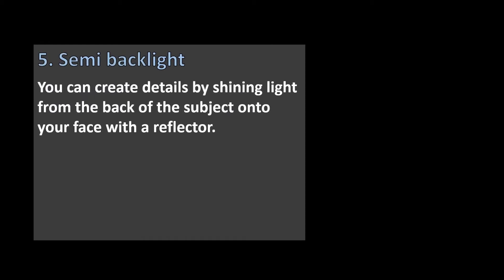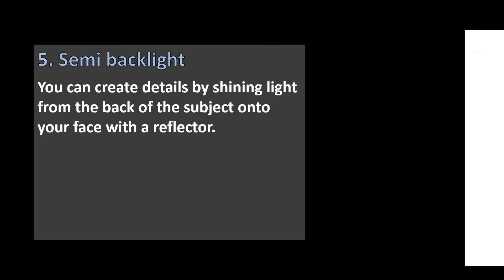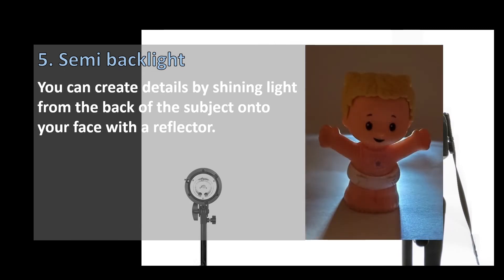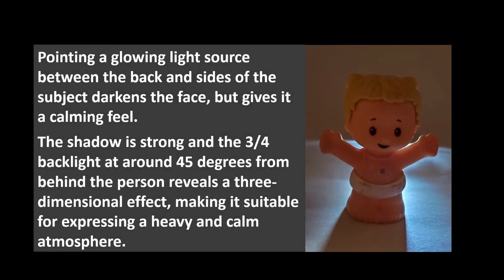5. Semi-Backlight. You can create details by shining light from the back of the subject onto the face with a reflector. Pointing a glowing light source between the back and sides of the subject darkens the face but gives it a calming feel. The shadow is strong, and the three-fourths backlight at around 45 degrees from behind the person reveals a three-dimensional effect, making it suitable for expressing a heavy and calm atmosphere.